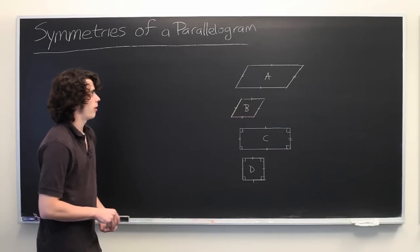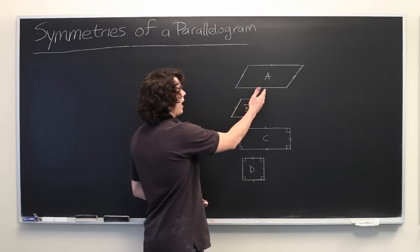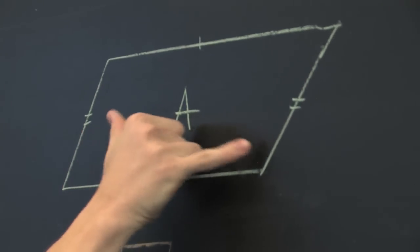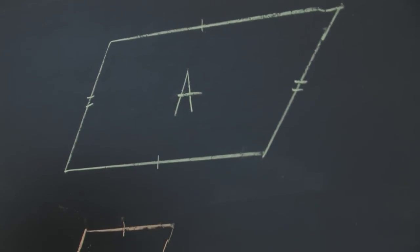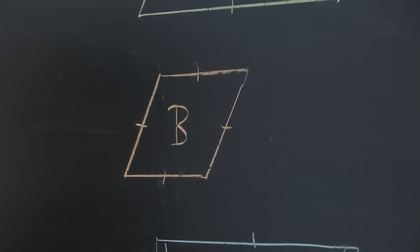So here we have four different parallelograms: A, B, C, and D. A we know nothing about other than the fact that these two sides are parallel and these two sides are parallel. B is a parallelogram in which all four sides are of the same length, commonly referred to as a rhombus.